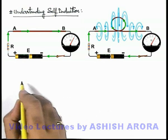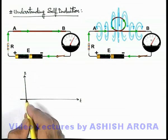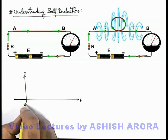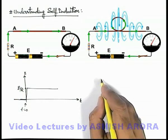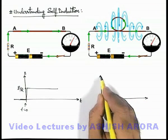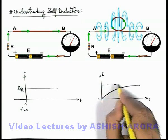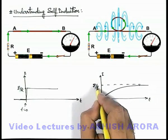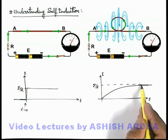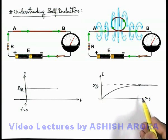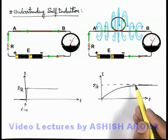Here we can draw the variation of current in the circuit with time. In the first circuit, if the switch is closed at t = 0, the current instantly rises to E/R because there was no opposition. But in the second circuit, due to the opposition of the circular loop, the current will not instantly rise — it will gradually rise and approach E/R after some time in an asymptotic fashion. Once it approaches E/R, no EMF will be induced in the circular loop and no opposition will be there; it will thereafter remain constant. If instead of one loop there are more loops, the opposition would be more and the slope of the graph would further decrease.